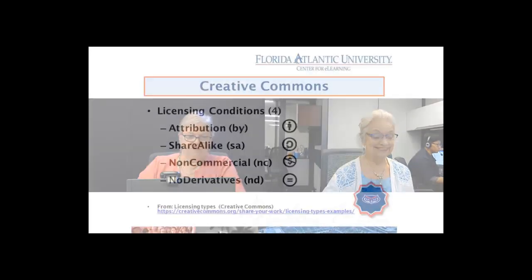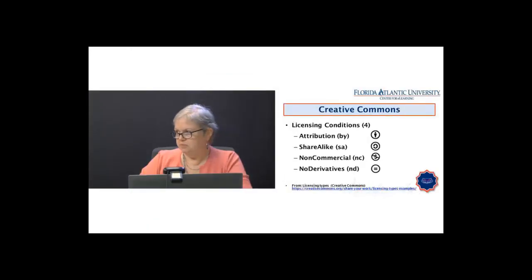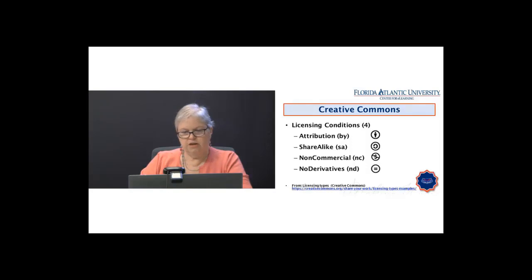Creative Commons has four different licensing icons. Attribution (BY) means you must indicate who created it and give them credit. Share Alike (SA) means you share the work under the same terms. Non-Commercial (NC) — indicated by a line through the dollar sign — means you cannot use it for commercial gain. No Derivatives (ND) means you cannot modify or alter the work.